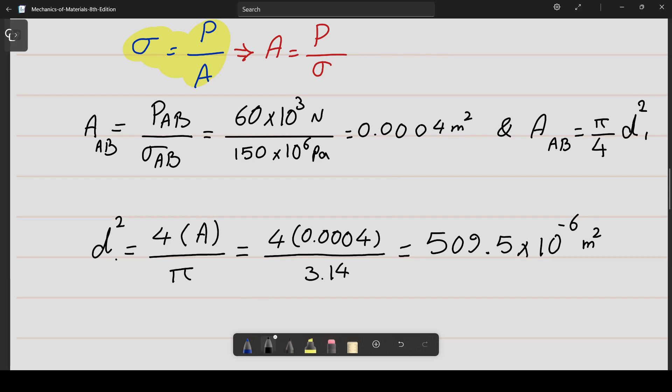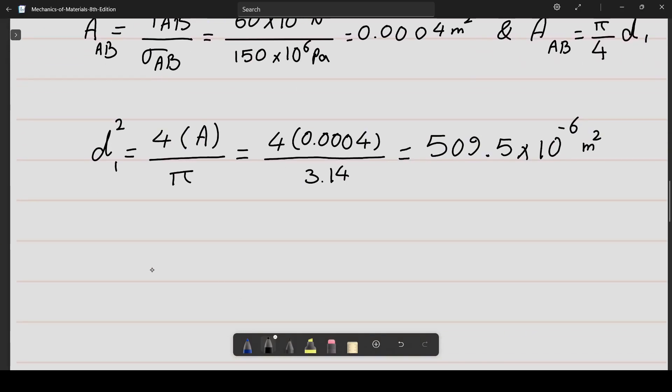This result is approximately 509.5 times 10 to the power of minus 6 square meters. Keep in mind that this value is for d squared. If you want to find the actual diameter, we need to take the square root of this value in the end. d1 is approximately equal to 22.572 times 10 to the power of minus 3 meters.